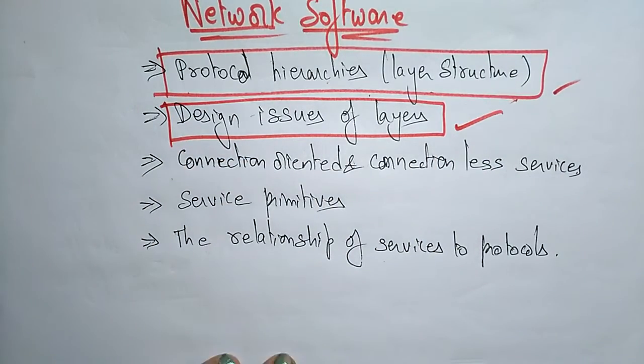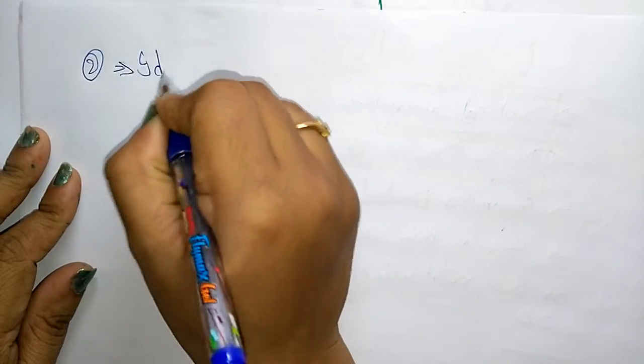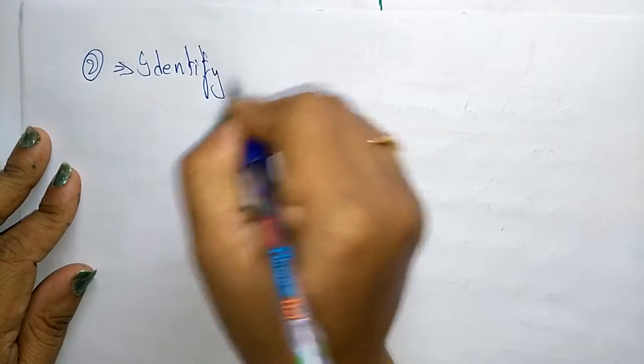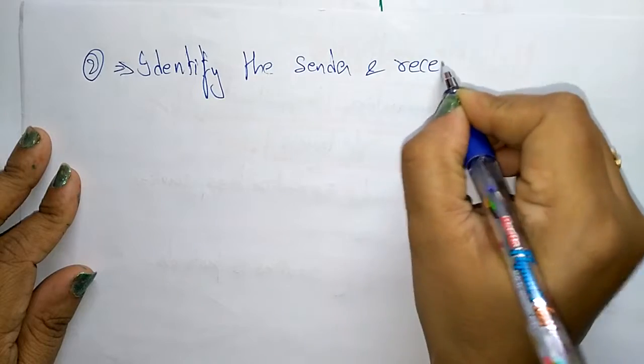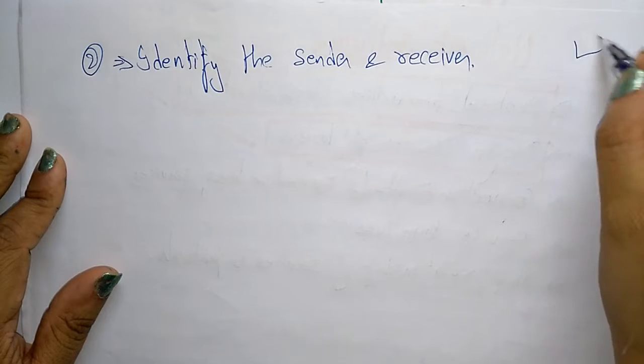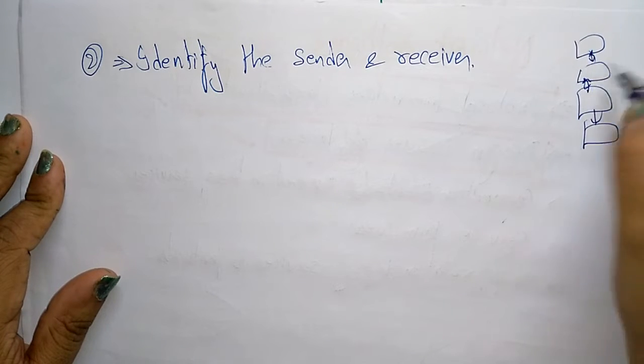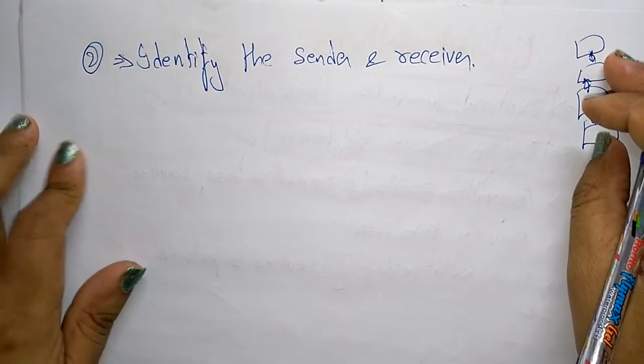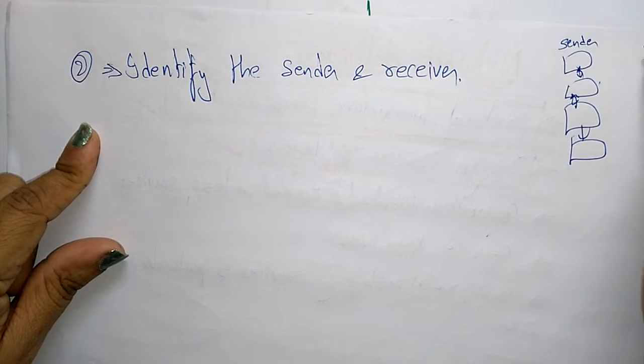So what are the design issues of layers? The design issues of layers are: first, we have to identify the sender and receiver. So the first design issue of the layer, whatever layers will be taken in the network software, is that first you have to identify the sender and the receiver.